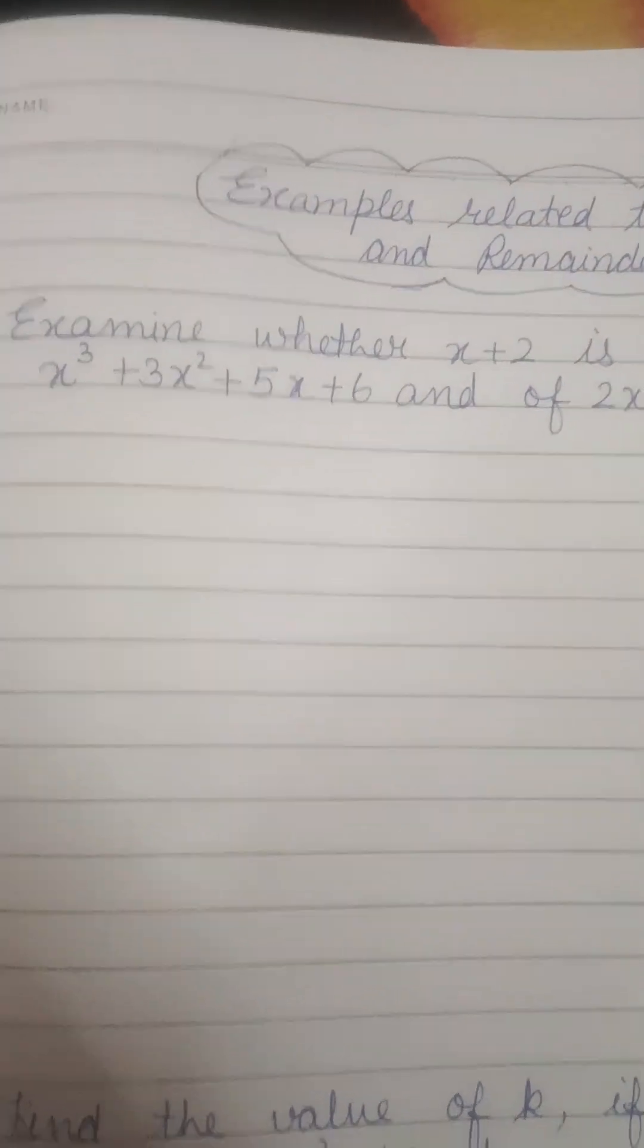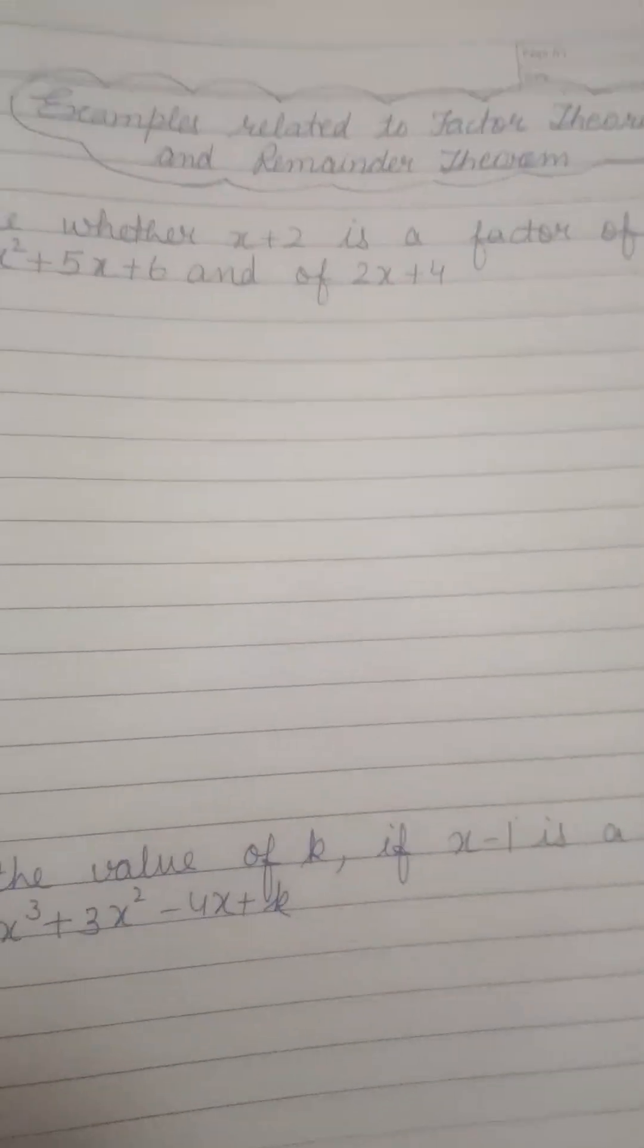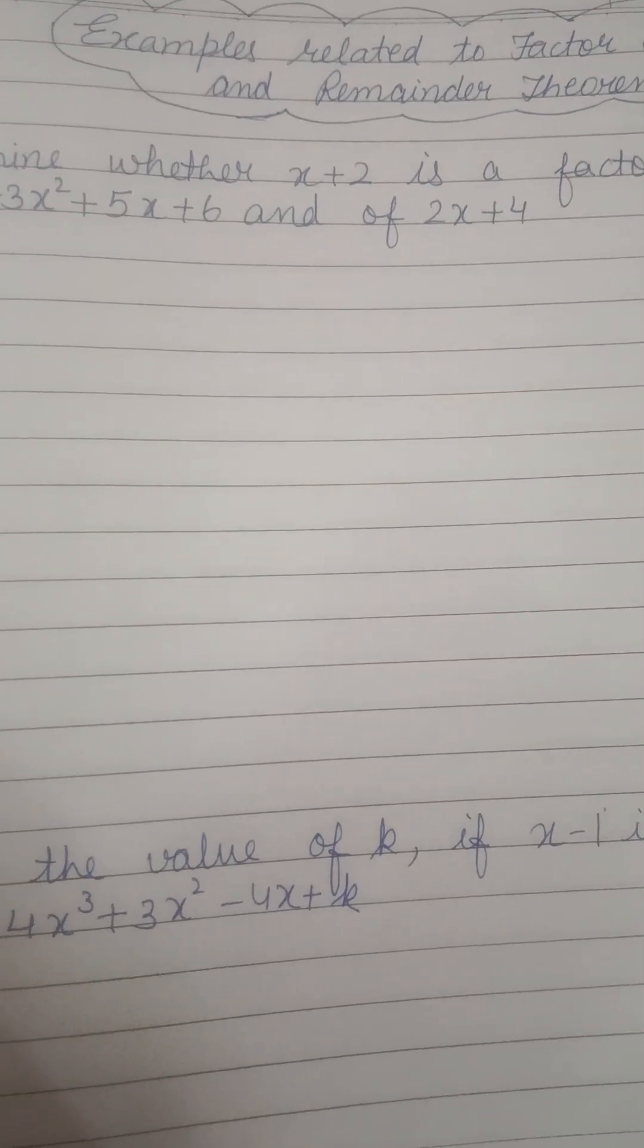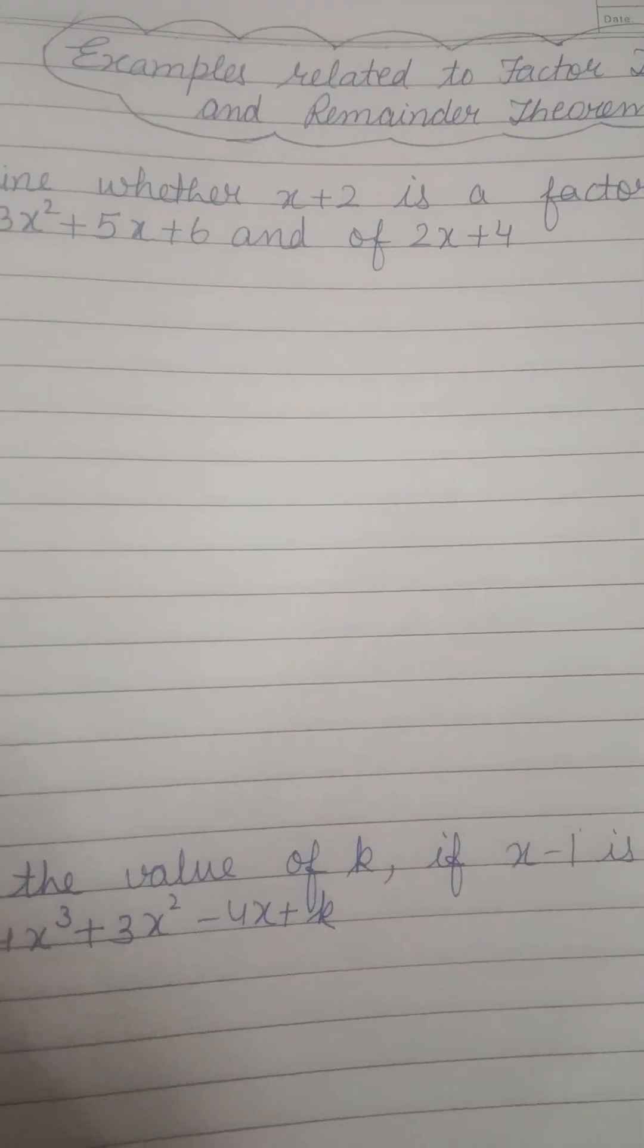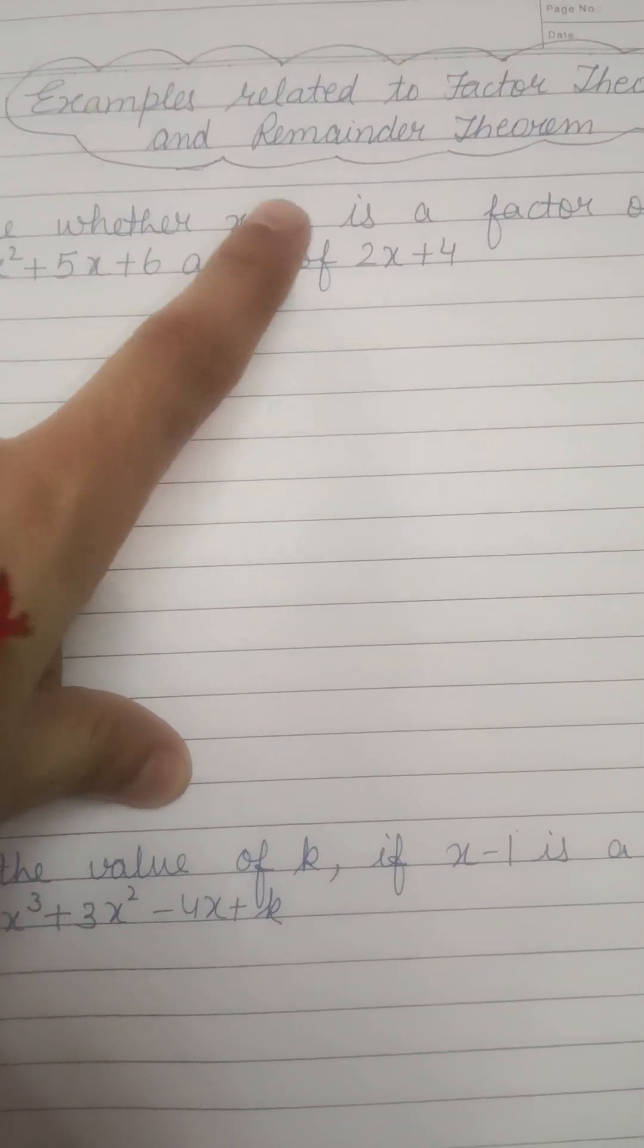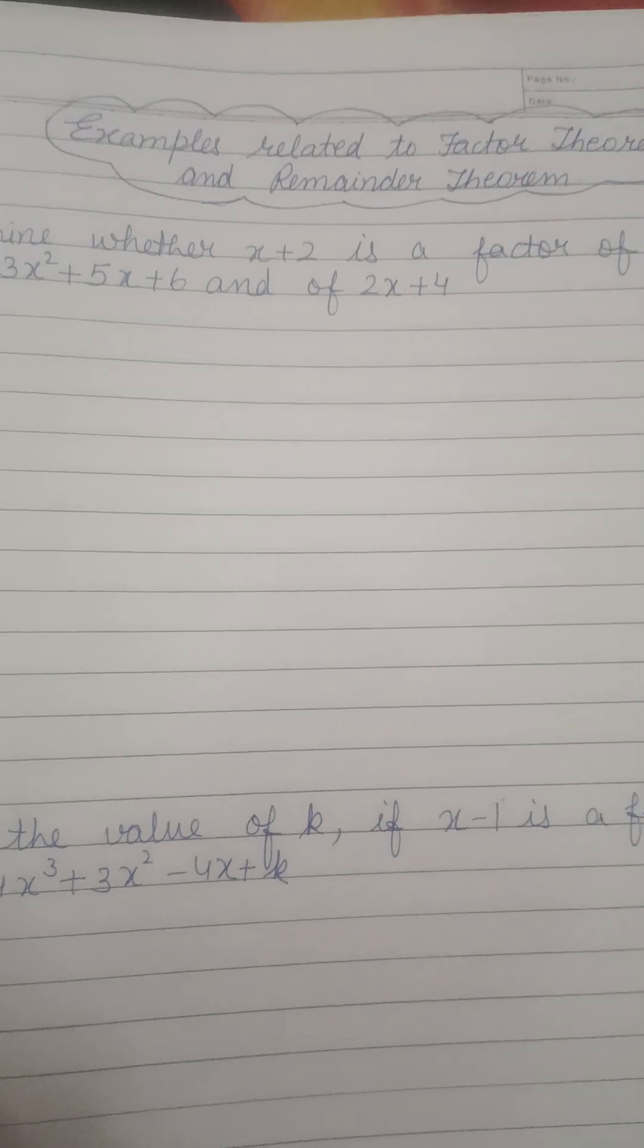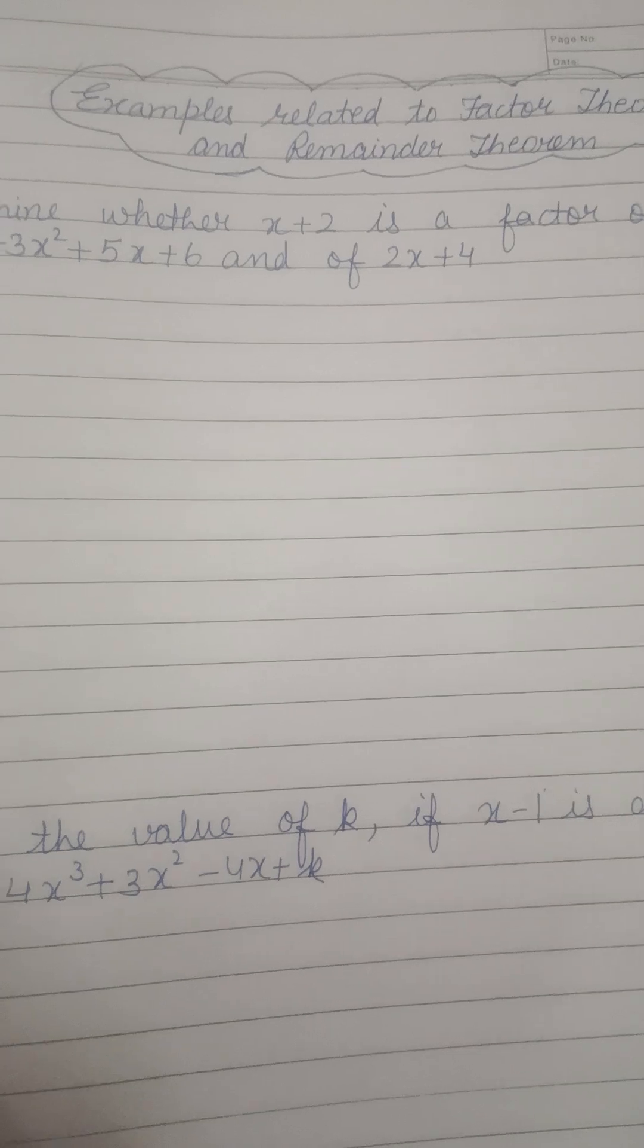What do we have done in the factor theorem? If x minus any real number is a factor of a polynomial, then its remainder will be 0. So if we find out the value of a, then it will be a factor, otherwise it will not be a factor of these two polynomials.